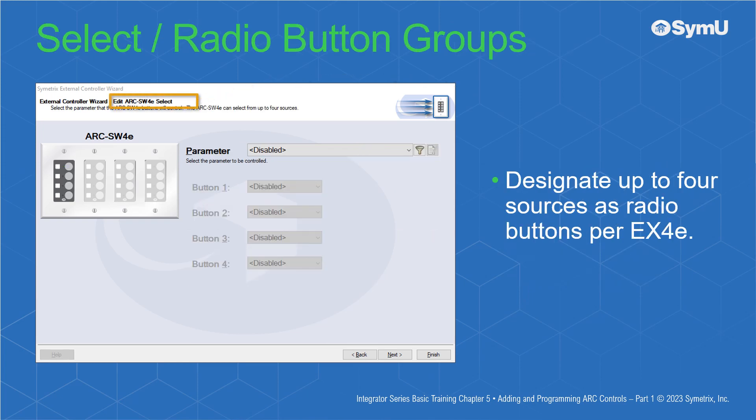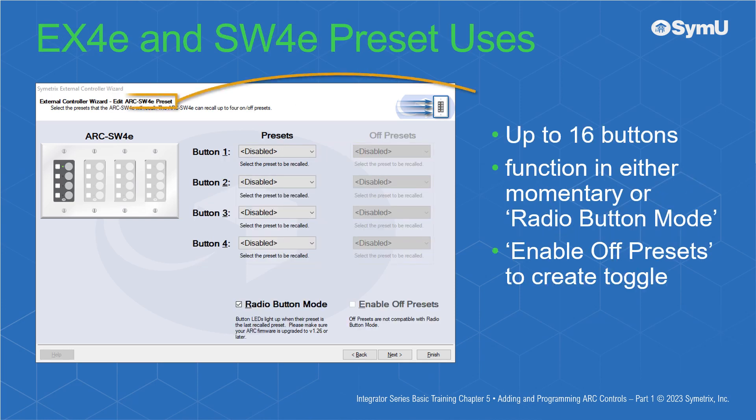Select Radio button groups mode allows you to designate up to four sources as radio buttons, one on per press, for each EX4E connected to the SW4E, up to a total of 16 sources. Preset mode allows up to 16 buttons, in groups of four, to function in either momentary mode — pressed to execute, LED dims after release — or radio button mode, where the button is pressed to execute and the LED remains lit. You may enable off-presets to create a preset toggle as well.